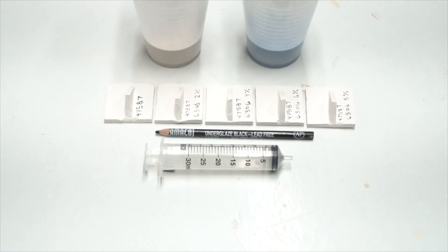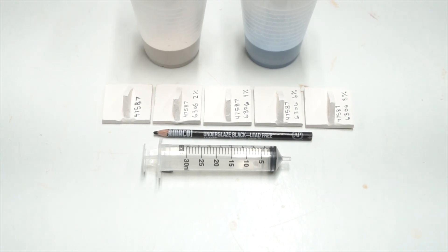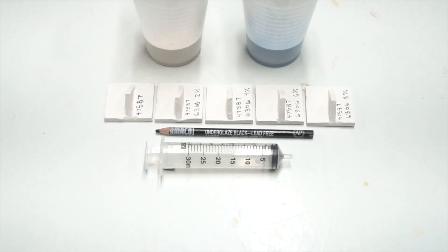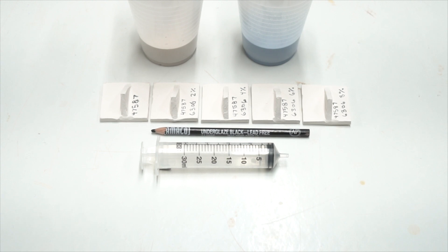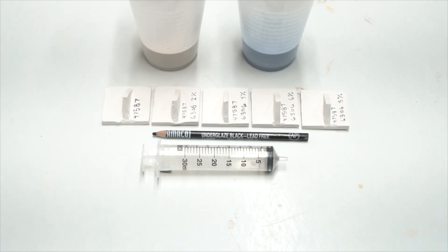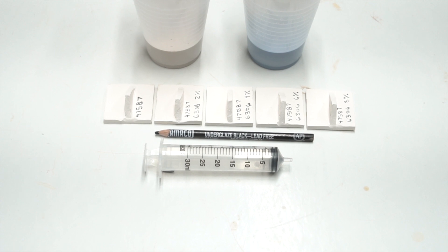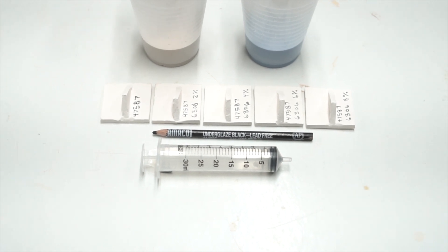In advance, I've prepared five test tiles to which I'll apply the five test glazes. On the back of each test tile, I've used an underglaze pencil to mark the glazy ID of the glaze as well as the blend amount.